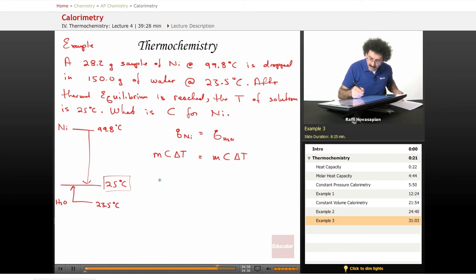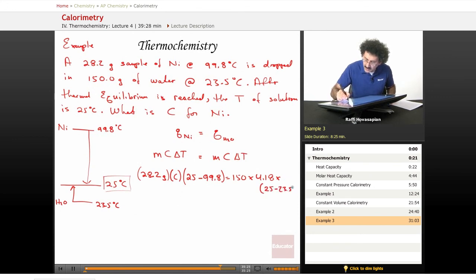Let's go ahead and put our values in. We have 28.2 grams of nickel, we're looking for c, that's what we want, and delta t is 25 minus 99.8. That's equal to the mass of water which was 150, and the specific heat of water is 4.18, and the change in temperature is 25 minus 23.5. That's the delta t for the water. It goes from 23.5 to 25, and this one goes from the final minus initial 25 from the 99.8.